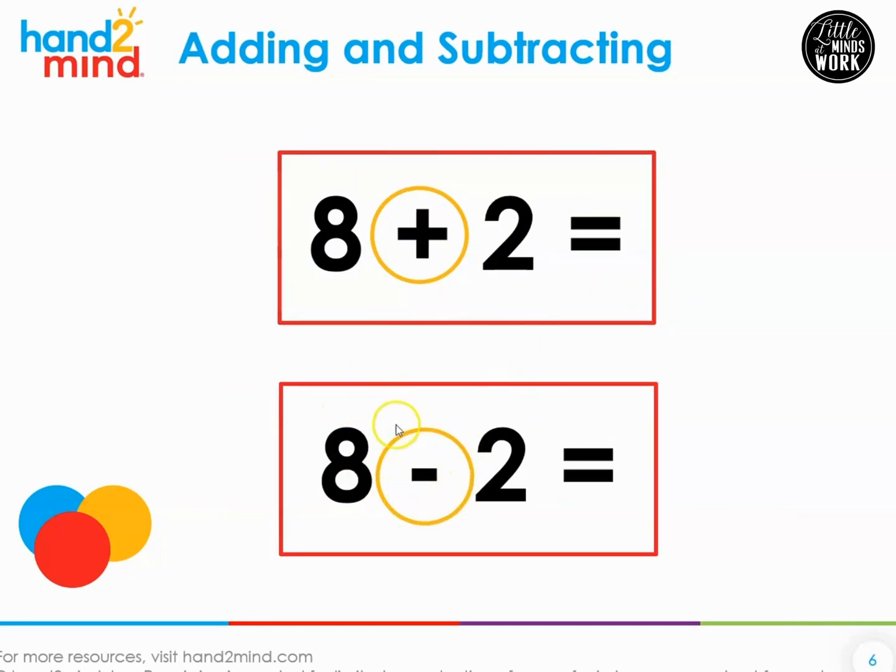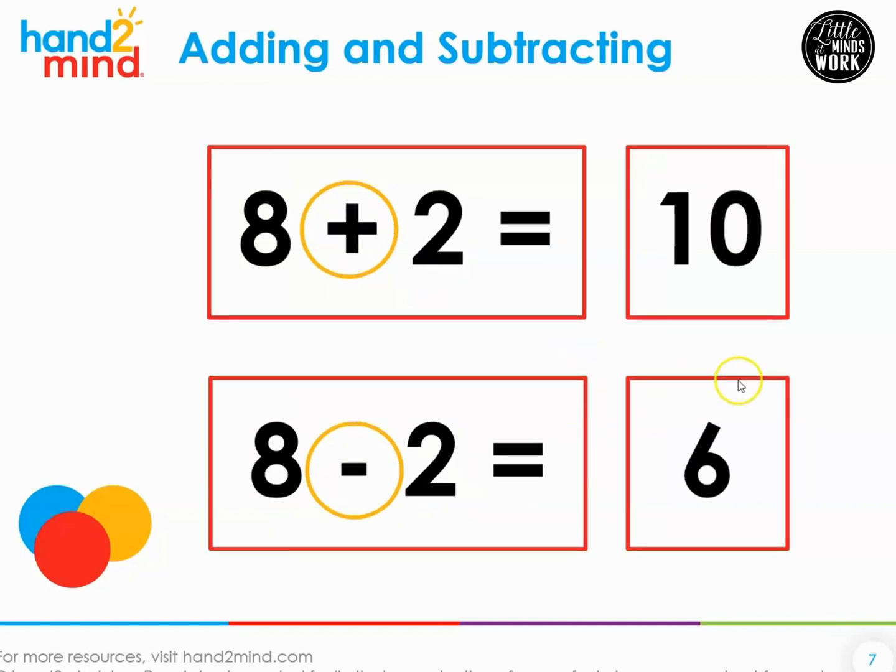Now, what does this symbol tell us to do? Take away. You're going to put down 8 items. Take away 2. Ready? Go ahead. What answer did you get? 6. 8 take away 2 is 6. Look at these problems. They look almost the same. The only thing different is that symbol. We always have to be looking to see are we going to add or are we going to subtract?